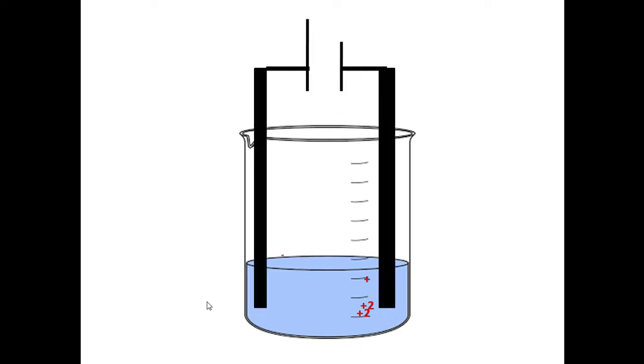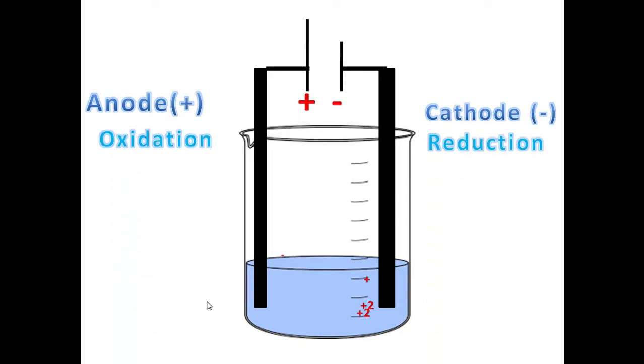As we know, the battery has positive and negative terminals. The positive terminal is called anode, and the negative terminal is called cathode. The process that takes place at the anode is oxidation. The process that takes place at the cathode is reduction process.